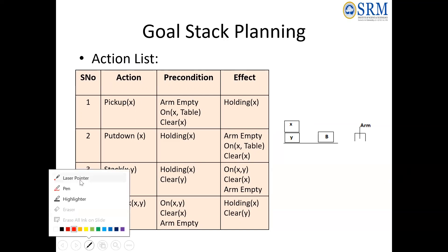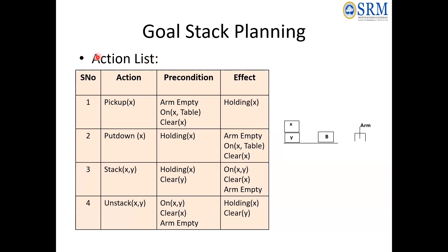There are four actions or functions used in Goal Stack Planning: pick up, put down, stack, and unstack. Pick up is lifting or holding something; put down is placing it; stack is placing one block above another — placing x above y; and unstack is removing x which is placed above y. These functions help us achieve the goal state.